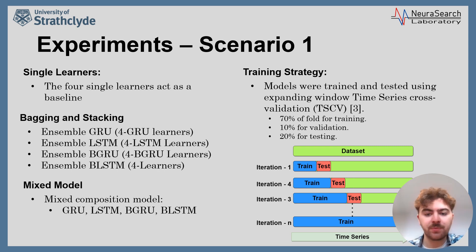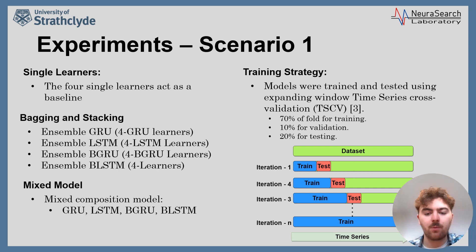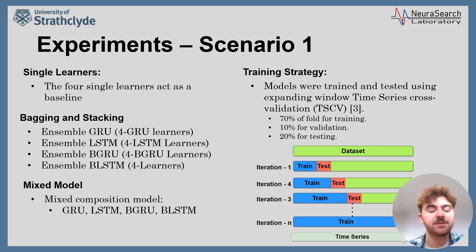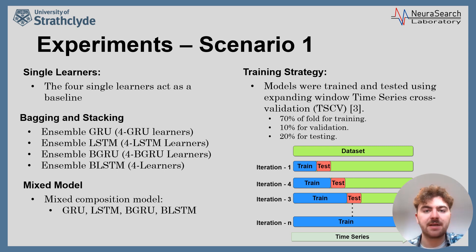For our training strategy, we select the time series cross-validation method, wherein we have an expanding window for each fold. 70% of the fold is used for training the models, 10% is used for validation, and lastly 20% is used for testing the models to produce our final accuracy results.